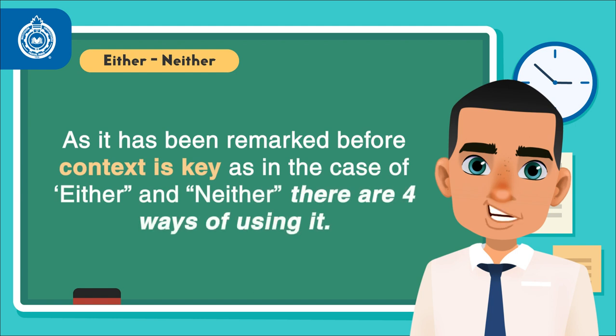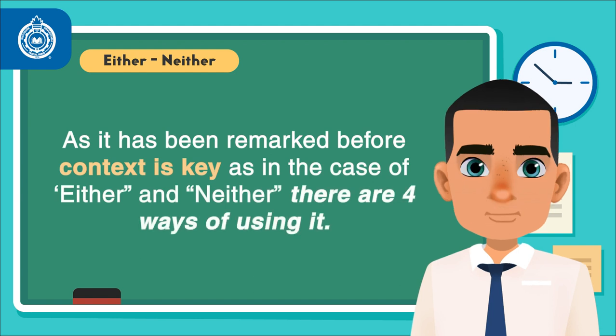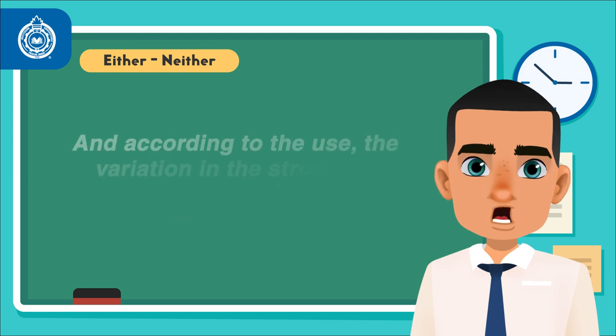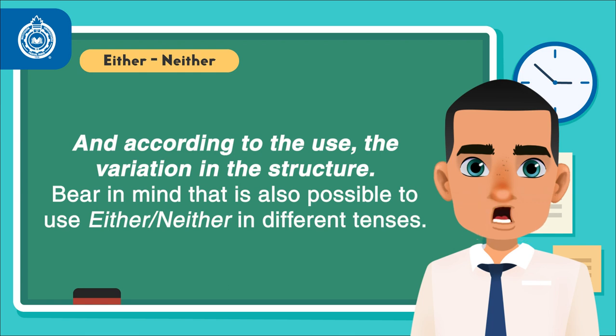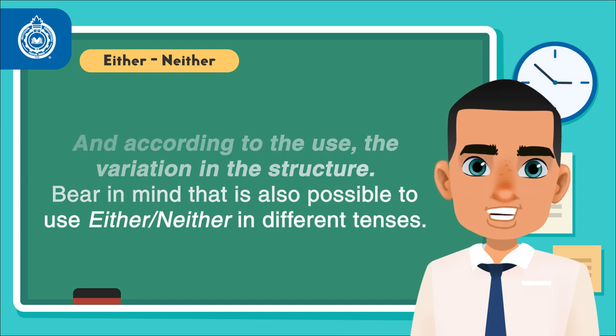As it has been remarked before, context is key. As in the case of either and neither, there are four ways of using it. And according to the use, the variation in the structure, bear in mind that it is also possible to use either and neither in different tenses.